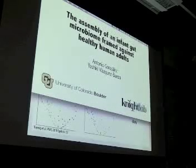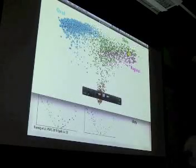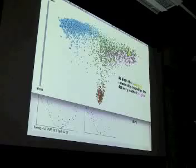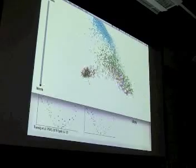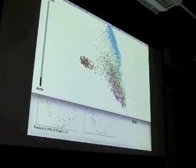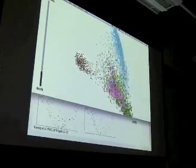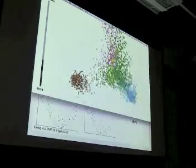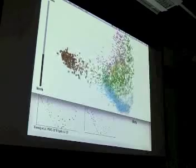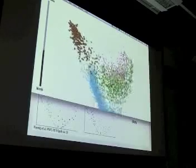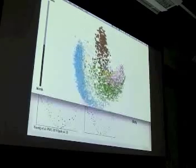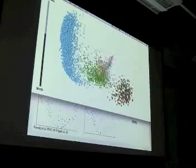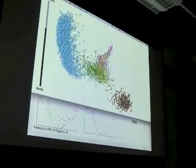Coming back to that infant development series — we have this very clear gradient from the meconium over the first couple of years of life toward the mother. What you'd really like to do is integrate with other samples such as all the samples of the Human Microbiome Project. Antonio Gonzalez and Yoshiki Vázquez-Baeza figured out how to do this. What we're doing is taking that one infant time series and integrating it with the rest of the HMP dataset. It starts off looking like the vaginal community, and you can see a lot of back and forth with inoculation from the skin and from the vaginal community, then starting to develop more toward the stool.